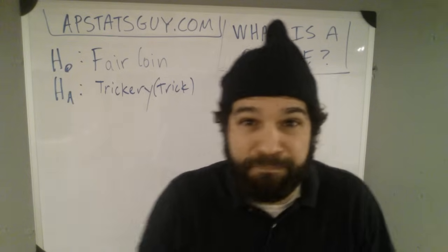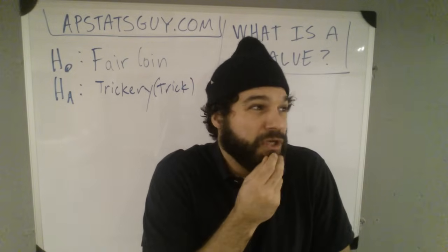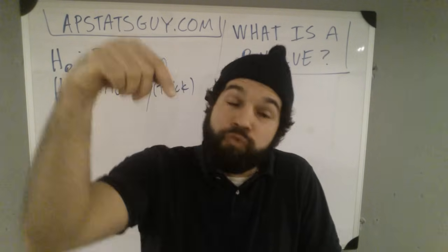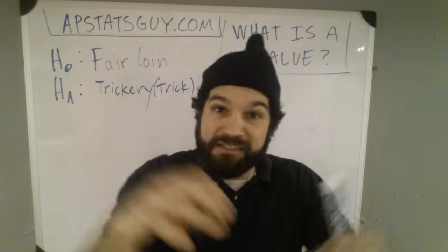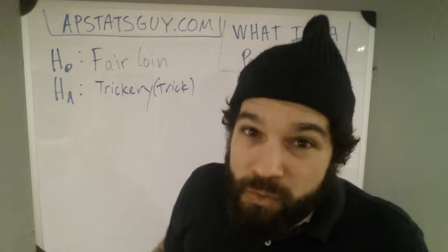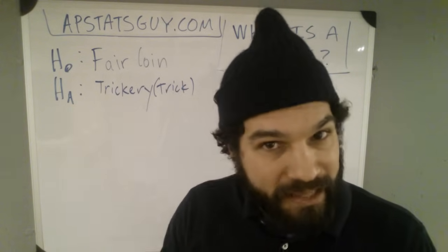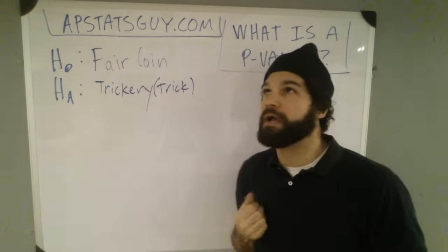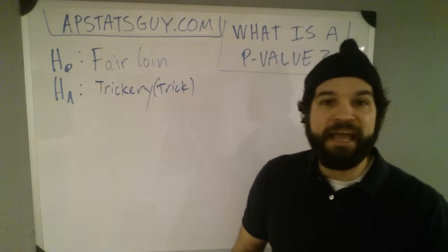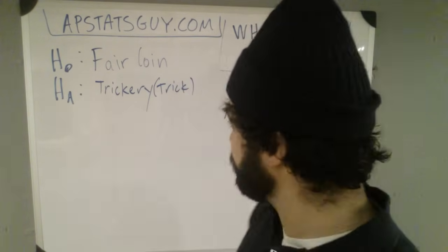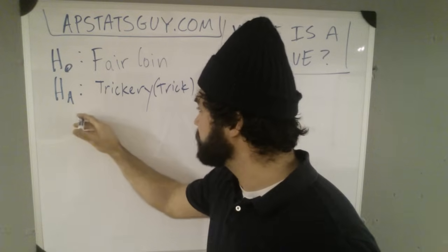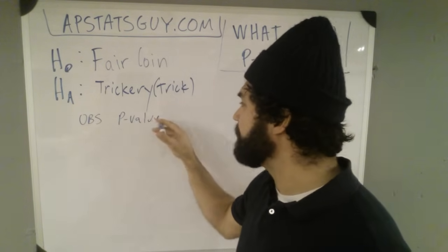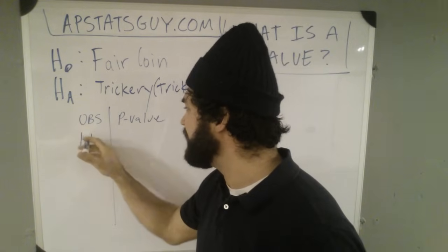The p-value is like the peculiar — that was peculiar. When something's really weird and you weren't expecting it to happen randomly, that's a low p-value. So let's see what happens here. I flip a coin — tails. Here's our observation: I observed one tail.